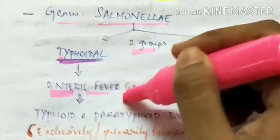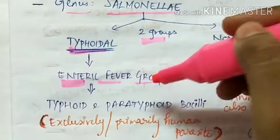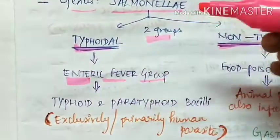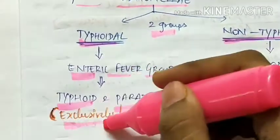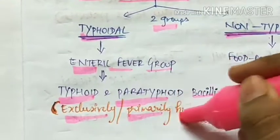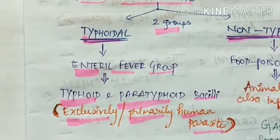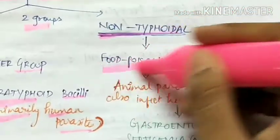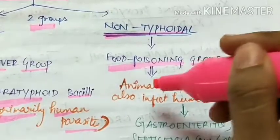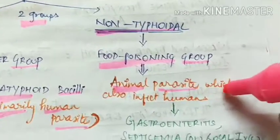That is, those which cause enteric fever, that is typhoid and paratyphoid bacilli. These are exclusively or primarily human parasites. Next group is non-typhoidal Salmonella, which are food poisoning group. They are animal parasites which can also infect humans. They cause gastroenteritis, septicemia, or local infections in humans.